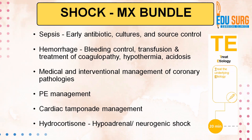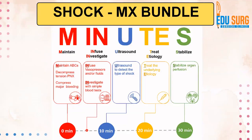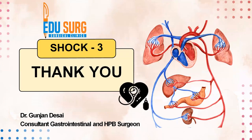Basically, treat the etiology — but this is after the management we have discussed. Maintain ABCs, give infusions, send investigations, look at the ultrasound using MINUTES, then start treating the etiology. If you do all of this in the prescribed time, the patient has been with you for only up to 30 minutes. Between 0 and 10 minutes you finish the MIN — the most important part — do your ultrasound, identify the cause, and start treating the etiology. In the first half hour you can achieve stabilization. A very practical approach to the generic management of shock.